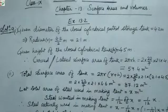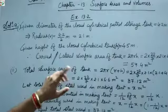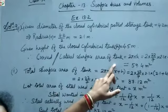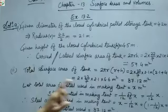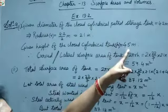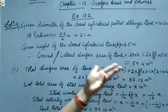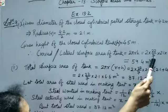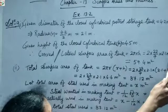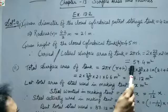Therefore, curved or lateral surface area of the tank = 2πRH = 2 × 22/7 × 2.1 × 4.5. On simplification we get 59.4 m².